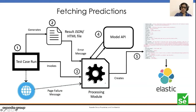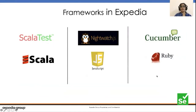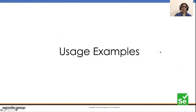Within Expedia, the current frameworks in use are Scala Test (implemented in Scala), Nightwatch JS (implemented in JavaScript), and Cucumber (with step definitions implemented in Ruby). For each framework, processing modules are implemented that can fetch predictions from the model endpoint and populate predictions for test case failures.